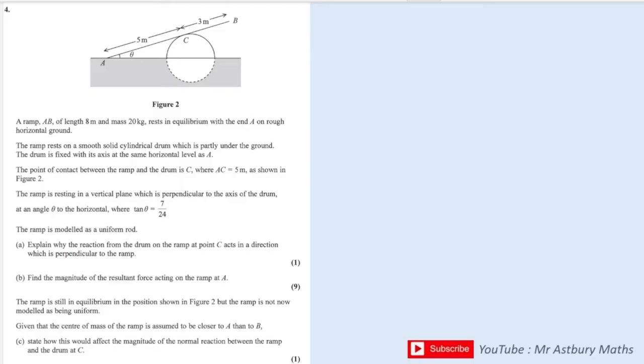Okay, lots of information at the start. I'll let you read that. I'm going to skip through it and get to the good part. And that is the question. Part A says explain why the reaction force from the drum on the ramp at point C acts in a direction which is perpendicular to the ramp.